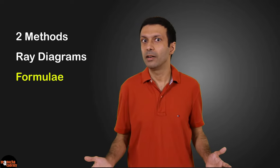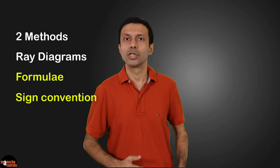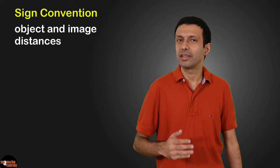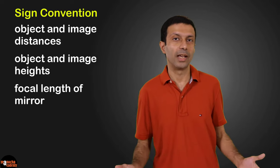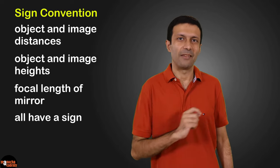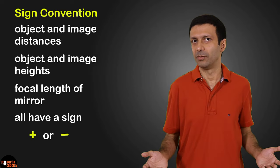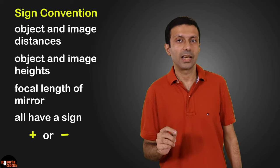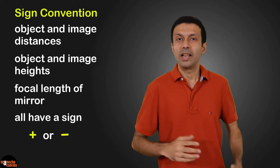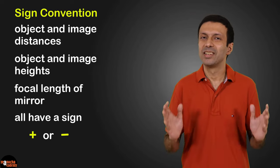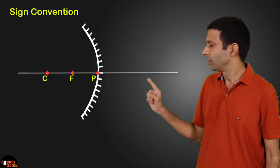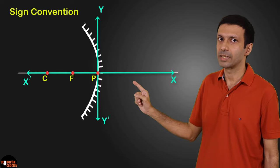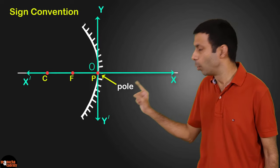But before we look at the formulae, we need to know the sign convention for spherical mirrors. According to the sign convention, the object and image distances, the object and image heights, and the focal length of the mirror — they all have a sign, positive or negative. The sign is decided by the sign convention. Let me show you a very simple way to understand the sign convention. Imagine we are placing the coordinate axis, the X and Y axis, with the origin at the pole of the mirror.